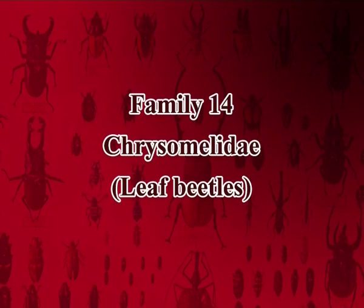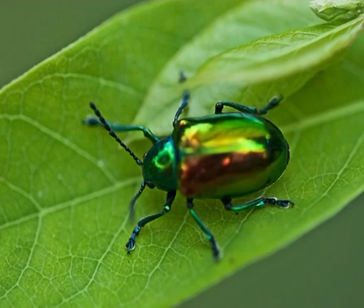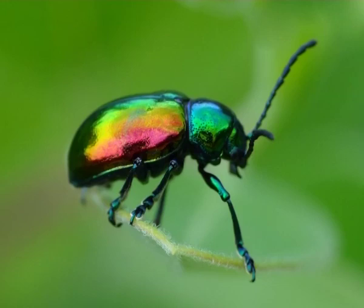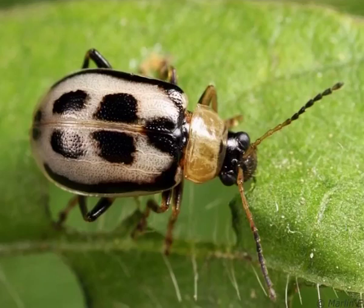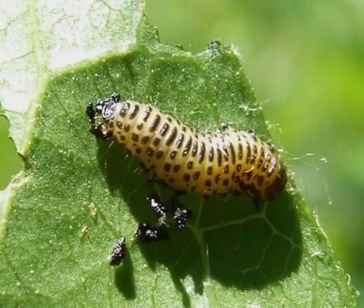Fourteenth family is Chrysomelidae, often called leaf beetles. Antennae are nearly always less than half as long as body and not capable of being flexed over the abdomen at rest. Tarsi of the leg is 5-5-5. Body is generally oval; eyes are usually not notched. Hind leg tibia is without spurs. Adults and larvae are phytophagous. Example: Dicladispa armigera, which is the paddy hispa.